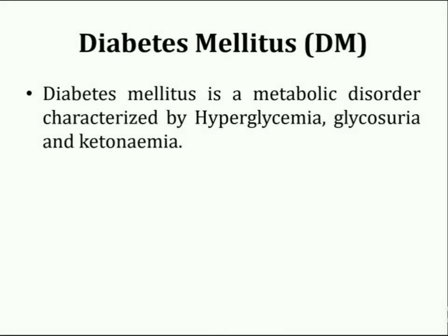Diabetes mellitus is a metabolic disorder characterized by three types of medical conditions: hyperglycemia, glycosuria, and ketonemia. Hyperglycemia is the medical term for a high blood sugar level. Glycosuria, also known as renal glycosuria, is a rare condition in which glucose is eliminated in the urine despite normal or low blood glucose levels. Ketonemia is the presence of high levels of ketone bodies in the blood.